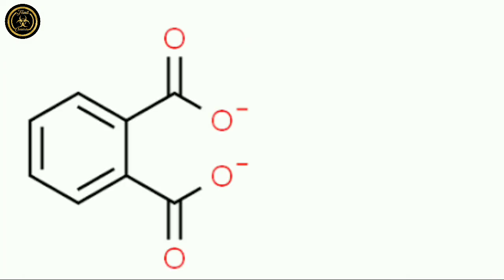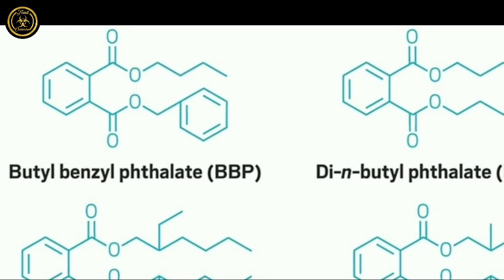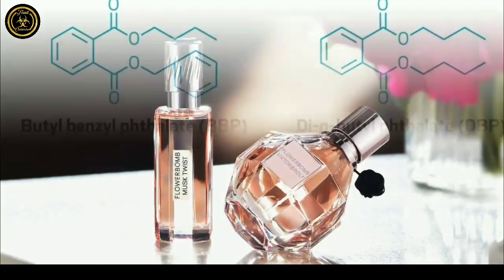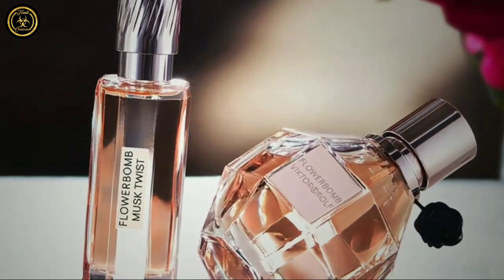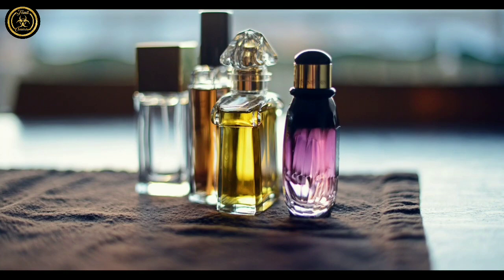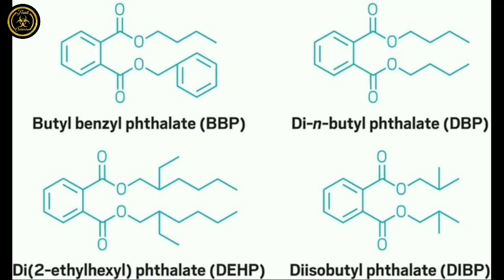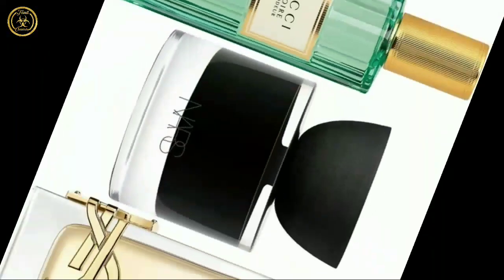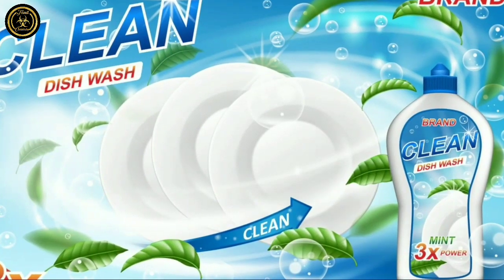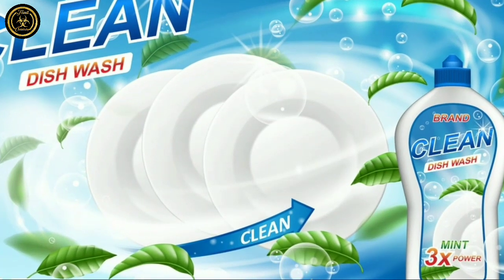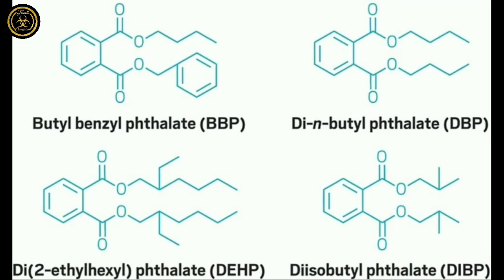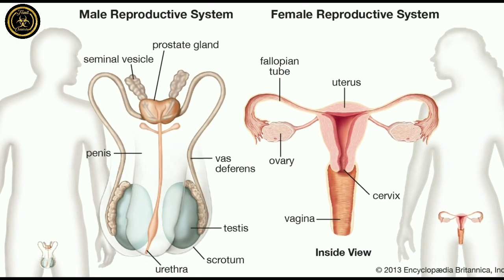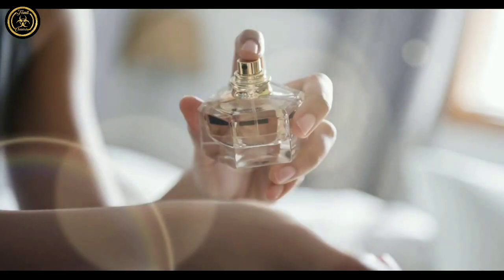First, we will look at Phthalates. The chemical compounds in this video are very significant. There are also some chemicals such as PBCs that are used. You will see how these chemicals relate to birth defects, and they are especially concerning for pregnant ladies.